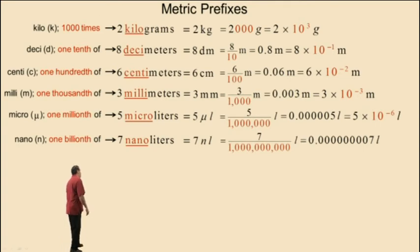5 microliters can be written as 5 times 10 to the negative 6 liters, because 10 to the negative 6 represents one one millionth. And finally, 7 nanoliters can be written as 7 times 10 to the negative 9th liters, because 10 to the negative 9th represents one billionth.